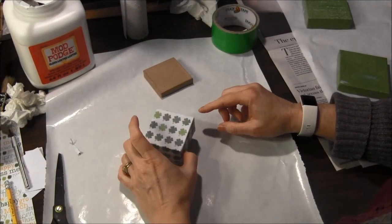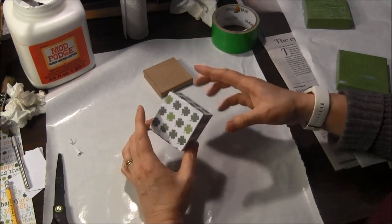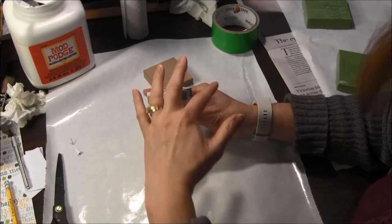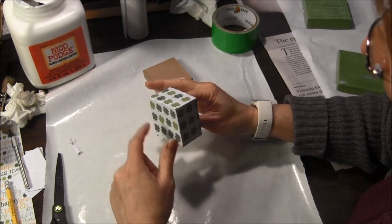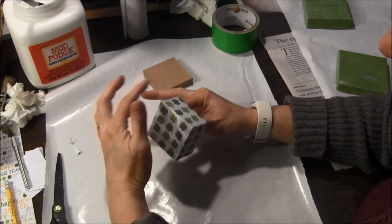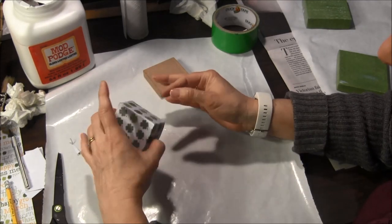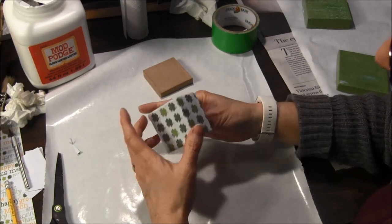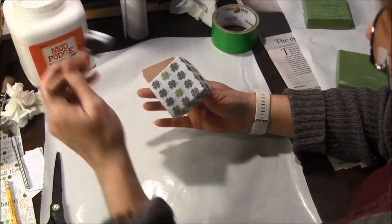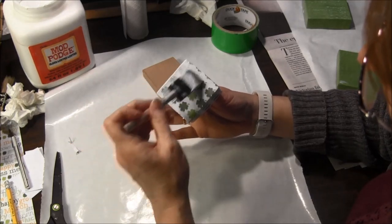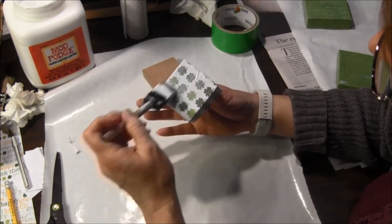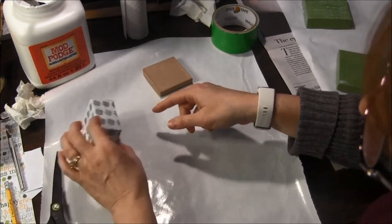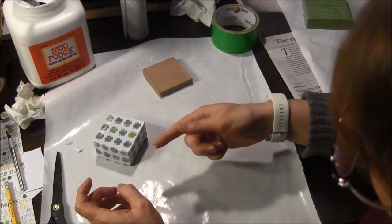So once you have the scrapbook paper all on your box, what you want to do is put Mod Podge over everything, the whole box. Now, I'm only going to do the outside of the box right now and I'll leave it dry before I do the inside edge of the box. So you just paint the Mod Podge over the entire thing and it dries clear. So now I'm going to put my box down and I'll leave it dry.